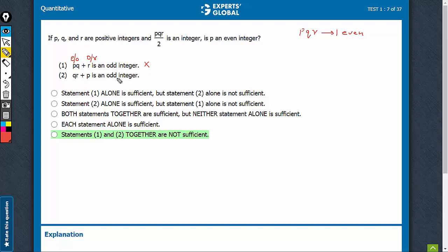Similarly here, the sum is odd. Therefore, either the first term is even and the second term is odd, or the first term is odd and the second term is even. Again, P could be even as well as odd. So alone statement 2 also does not work.